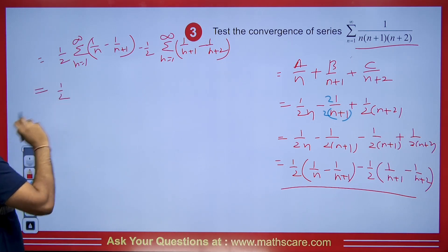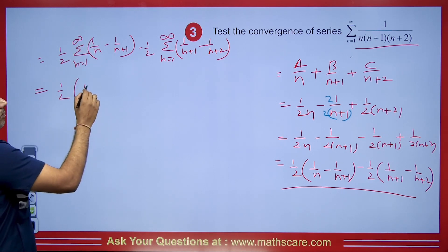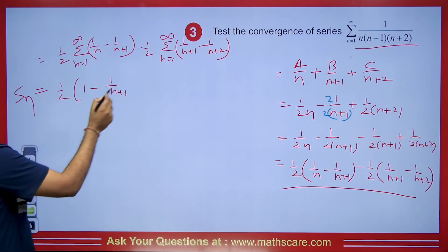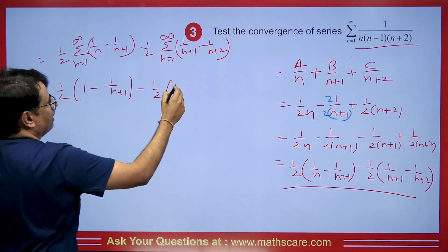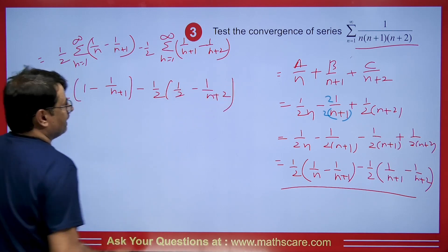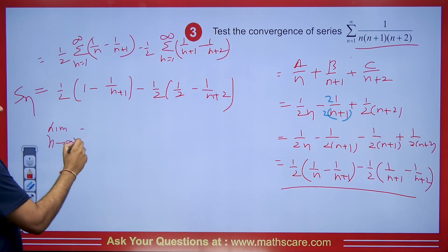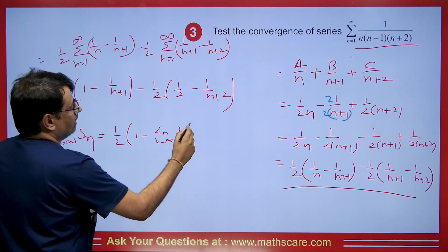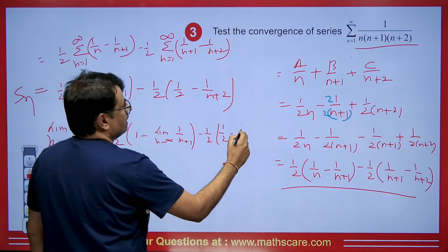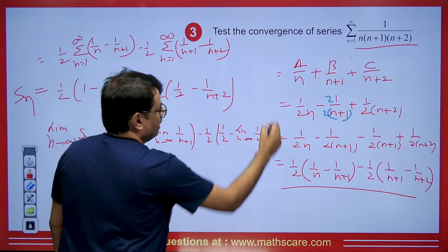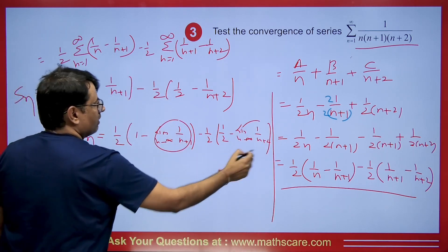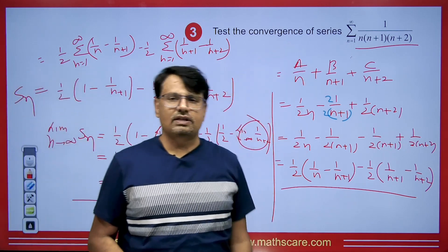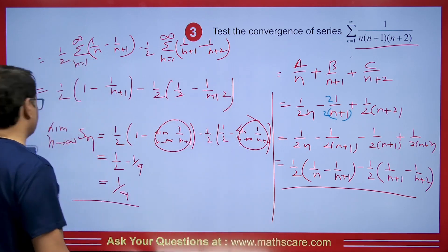So combining: it is (1/2)·∑[1/n − 1/(n+1)] − (1/2)·∑[1/(n+1) − 1/(n+2)], n = 1 to ∞. Each sum telescopes: the first gives (1/2)(1 − 0) = 1/2, and the second gives (1/2)(1/2 − 0) = 1/4. Therefore the total is 1/2 − 1/4 = 1/4, confirming the shortcut trick answer.